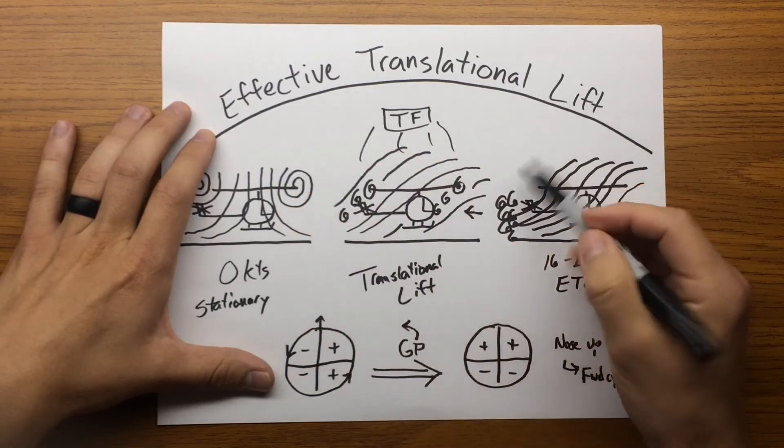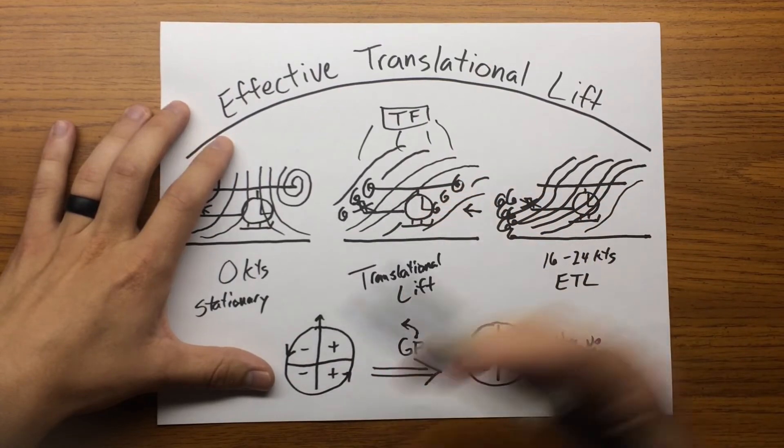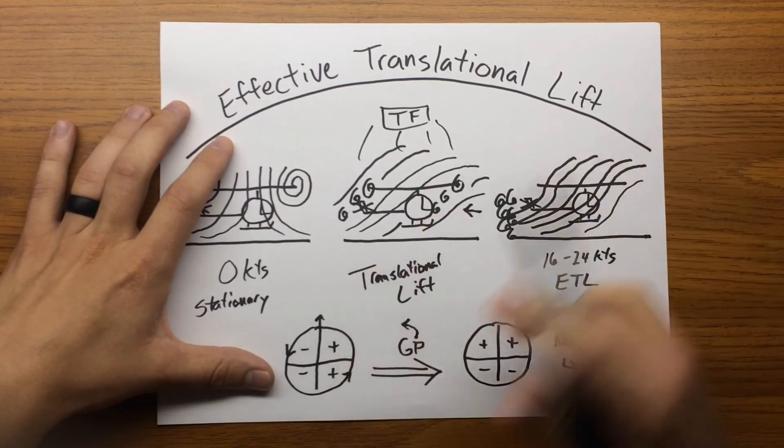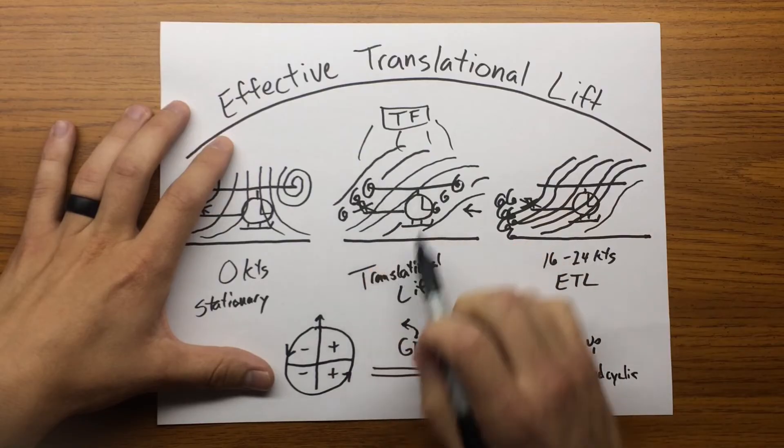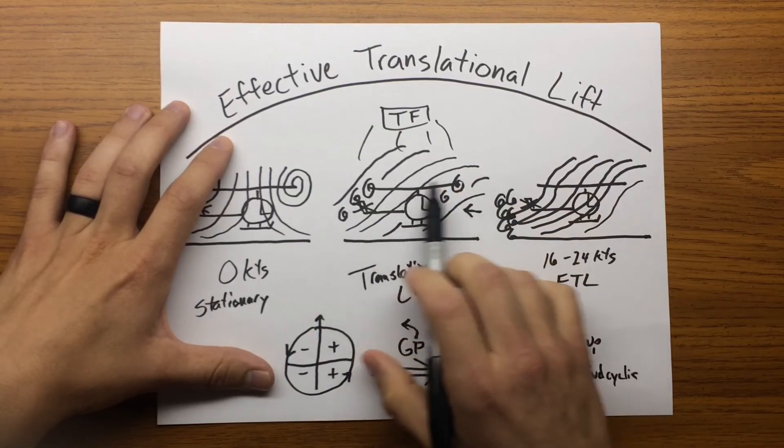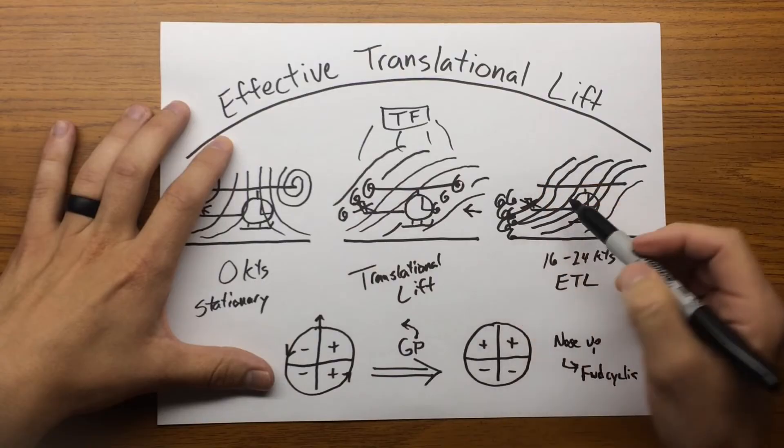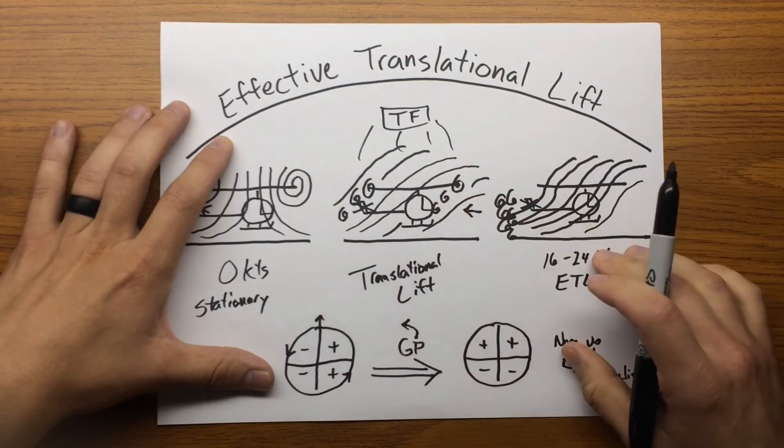Effective translational lift is talking about the outrunning of these vortices. So I'll combine those in a video soon. But just to clarify, transverse flow is the difference in airflow, whereas effective translational lift is the outrunning of the vortices.